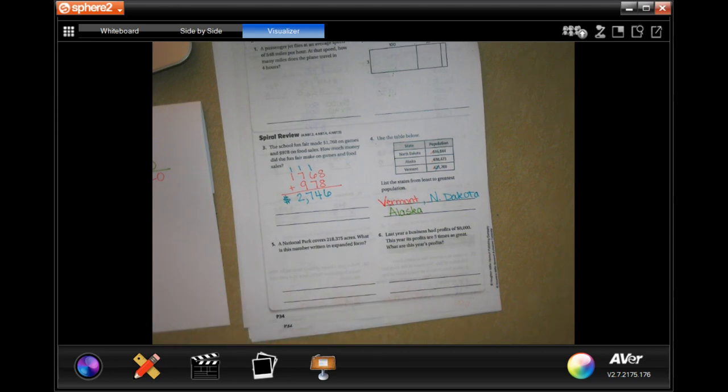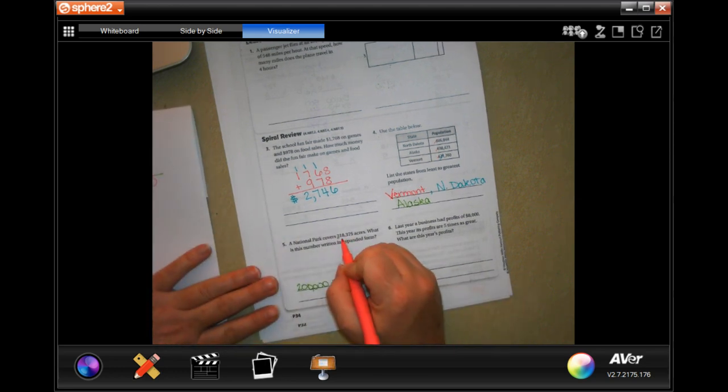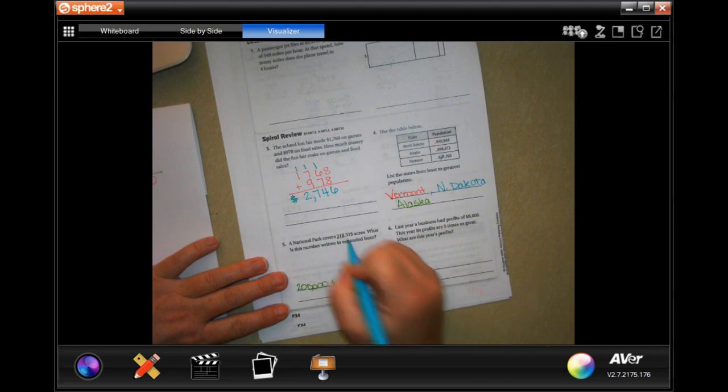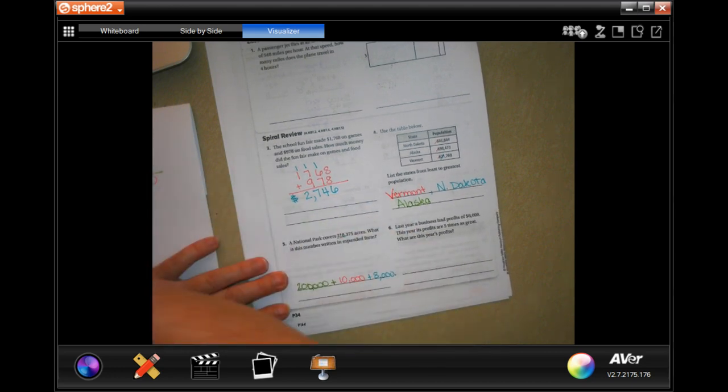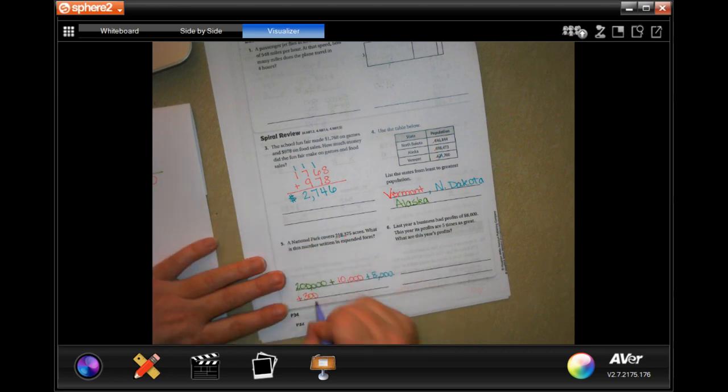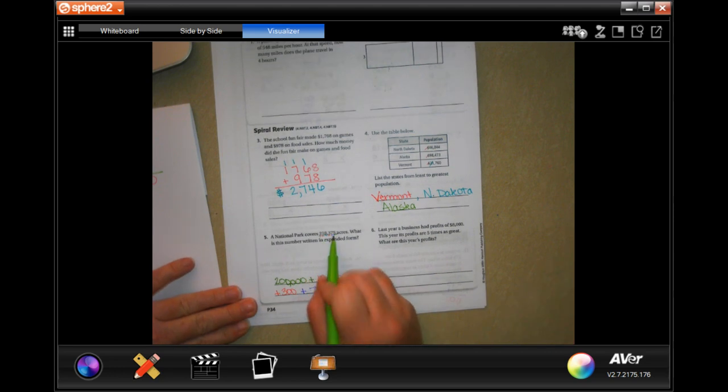All right. A national park covers 218,375 acres. What is this number written in expanded form? Well, we're just going to take each digit. So 200,000 plus 10,000 plus 8,000 plus 300 plus 70 and plus 5. That's it, guys. All I did was break it up by place.